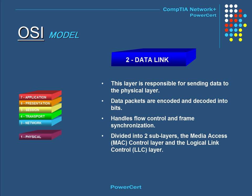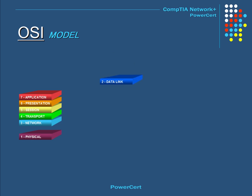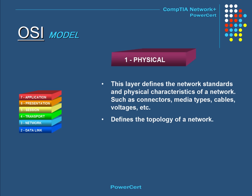The data link layer is responsible for sending data to the physical layer. Data packets are encoded and decoded into bits. It handles flow control and frame synchronization, and is divided into two sub-layers: the Media Access Control layer and the Logical Link Control layer. The physical layer, at the bottom of the OSI model, defines the network standards and physical characteristics of a network, such as connectors, media types, cables, and voltages. This layer also defines the topology of a network.